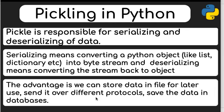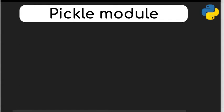The advantage of the pickling process is that the data stored this way can be used under different platforms. Not only can we store it on the hard disk, we can even send it over different protocols, and databases can also use it. To use pickling — serializing and deserializing — we use something called the pickle module.